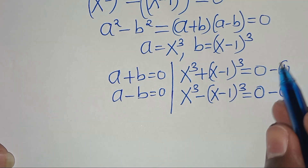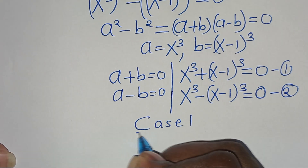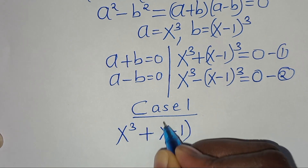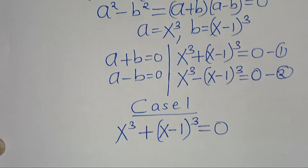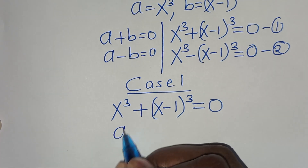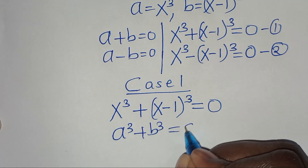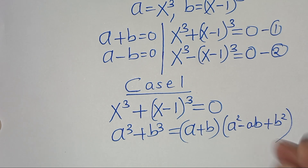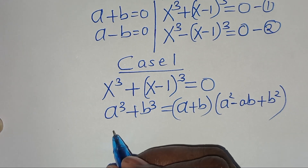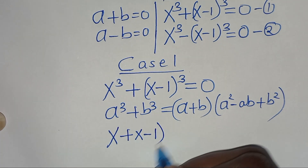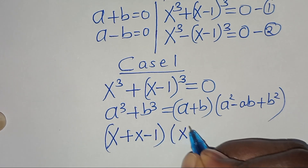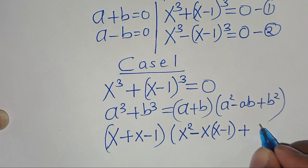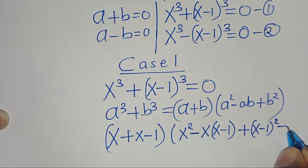Now let's start to solve equation 1 here, we can call this case 1. In this case 1, we have x to the power of 3 plus x minus 1 to the power of 3, this is equal to 0. Now this is the sum of two cubes, expressed as a to the power of 3 plus b to the power of 3, that we can express as a plus b, times a squared minus ab plus b squared. Applying this identity, we have x plus x minus 1, then times x squared plus x times x minus 1, then plus x minus 1 to the power of 2, this is equal to 0.